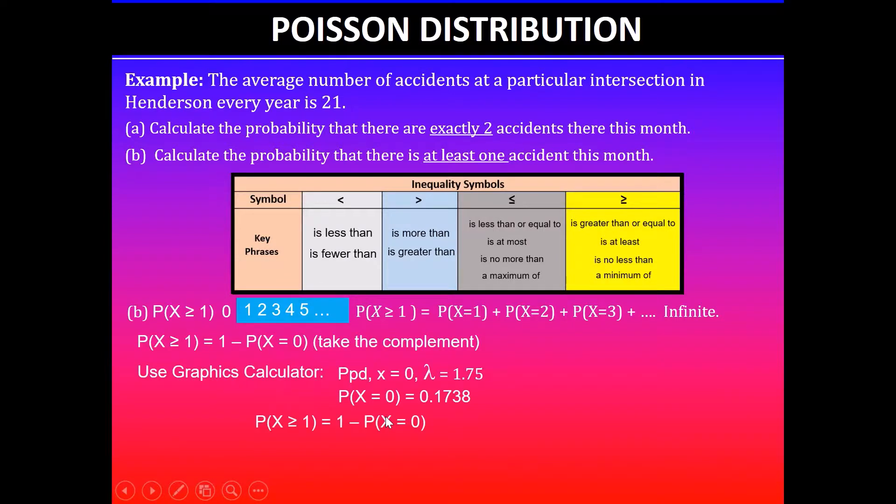So using complement, probability when X is greater than or equal to 1 is the same as 1 minus probability when X is 0. In this case that is 0.1738, so 1 minus 0.1738 will give you the probability 0.8262. You must answer the question in context.